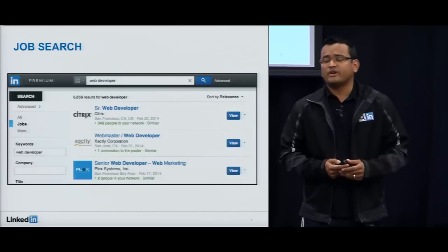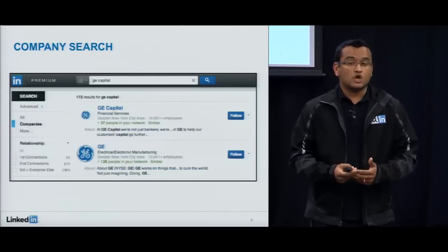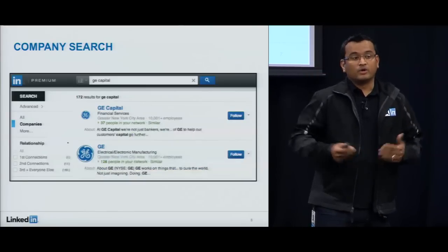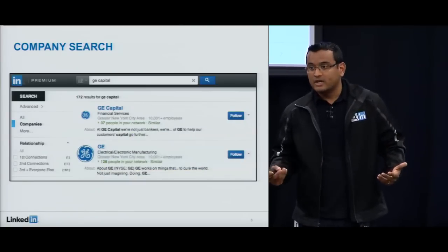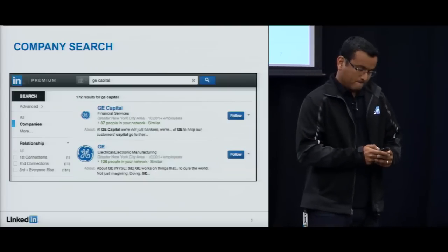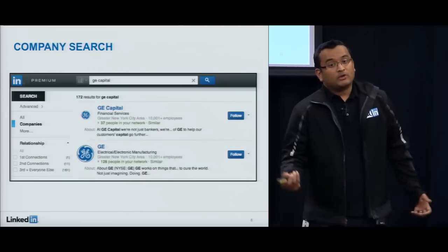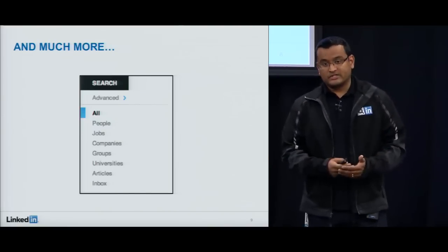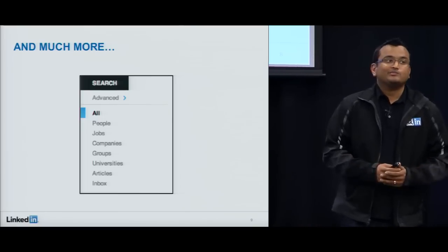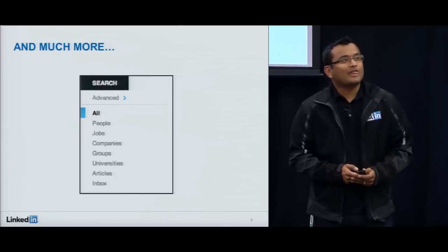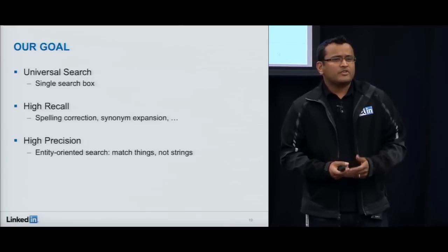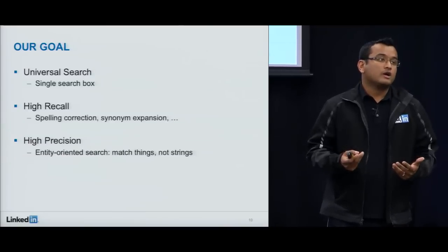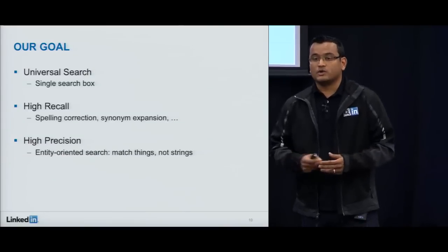People are just one of the entities you can find on LinkedIn. There are also job postings — you enter a query like 'web developer' and we give you a ranking of relevant job postings. You could look for companies by name or by attributes like 'big data' to find companies working in a particular field. And there's much more: groups, universities, blog posts, articles, and so on. Our goal in the search team is to make all this content available through a single unified search interface.